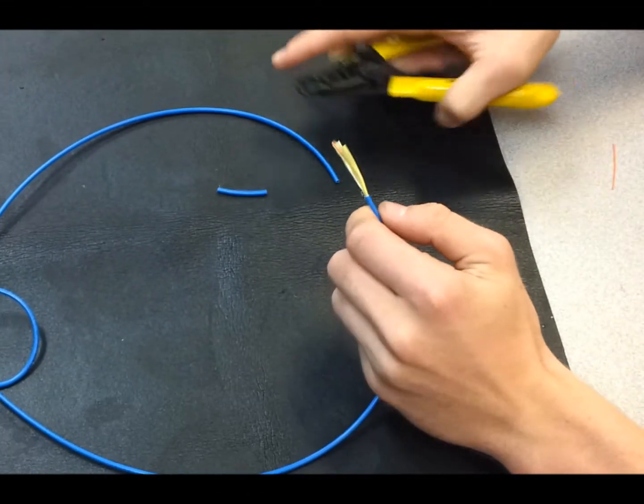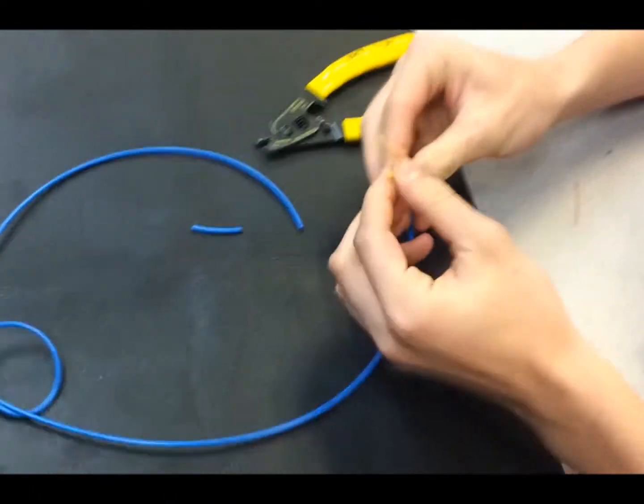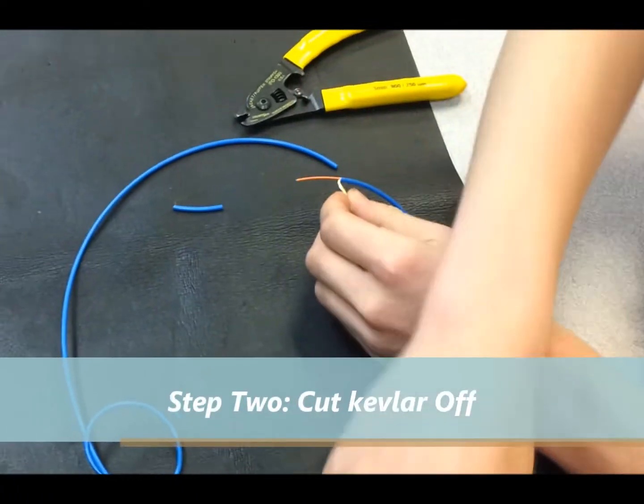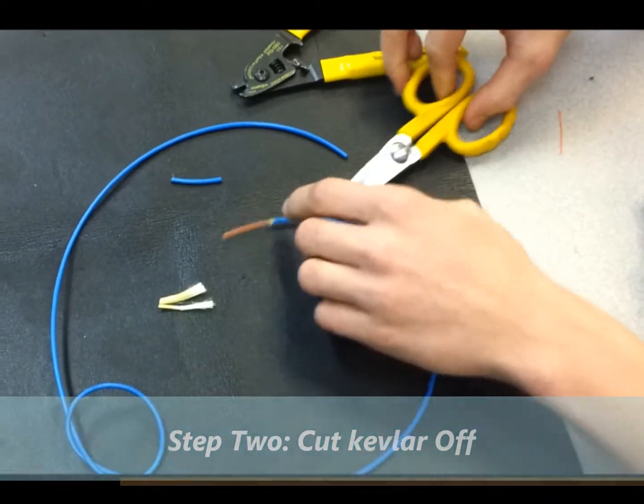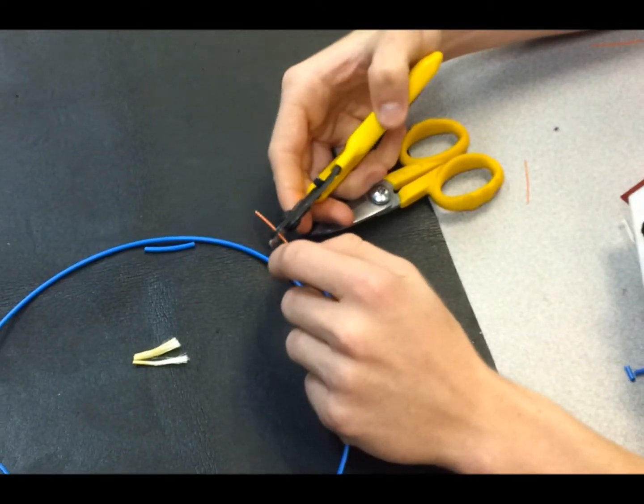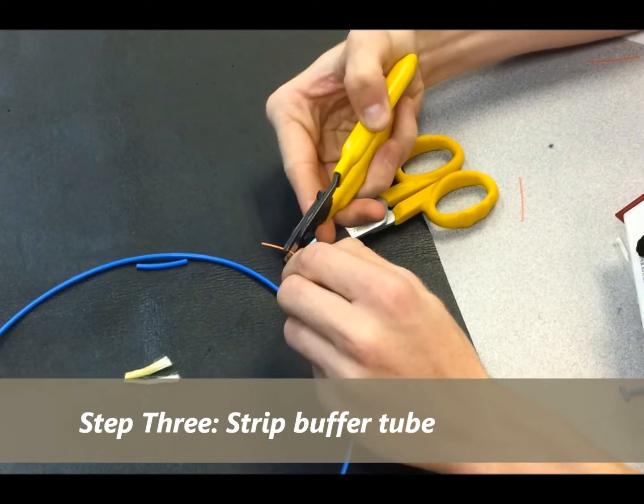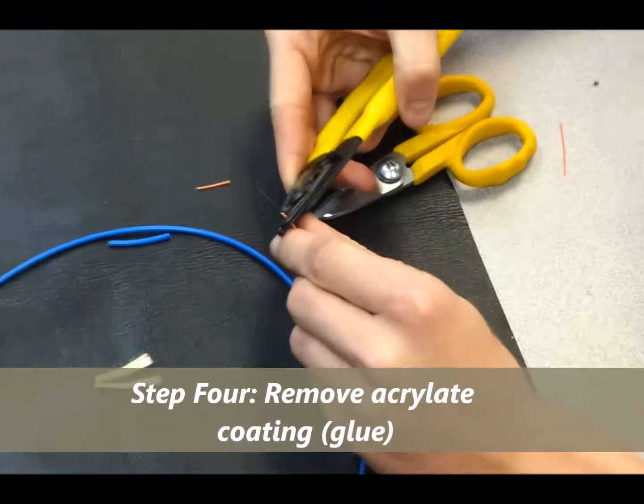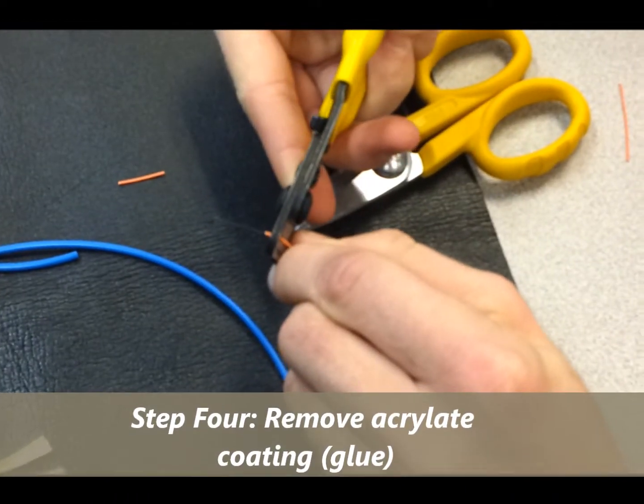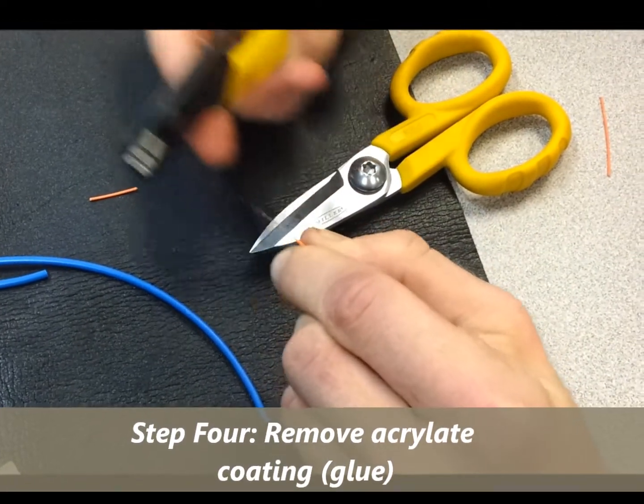We're going to start by cutting off the outer jacket. I'm going to separate the Kevlar from the buffer tube and we're going to cut the Kevlar off. Now we're going to strip back the buffer tube with the strippers. As you see the glass, you have acrylate glue on it and we're going to have to strip that off also.